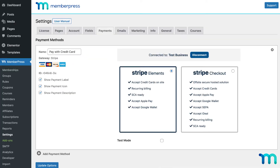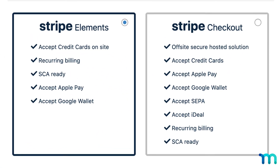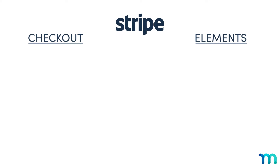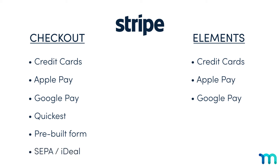Did you know you can connect MemberPress with Stripe a couple of different ways? There's Stripe Checkout and Stripe Elements. Both let you accept credit cards, Apple Pay, and Google Pay. But Stripe Checkout is the best option if you want to get up and running immediately. It's got a pre-built-in form housed on Stripe.com, so there's minimal setup. Stripe Checkout also lets you accept payments through the Single Euro Payments area and iDEAL, which can come in handy if you have customers in the EU.